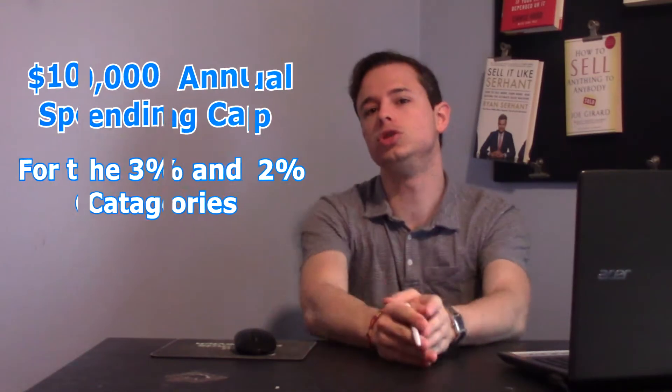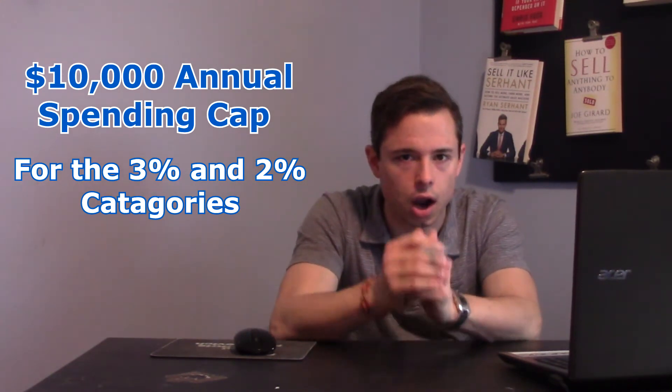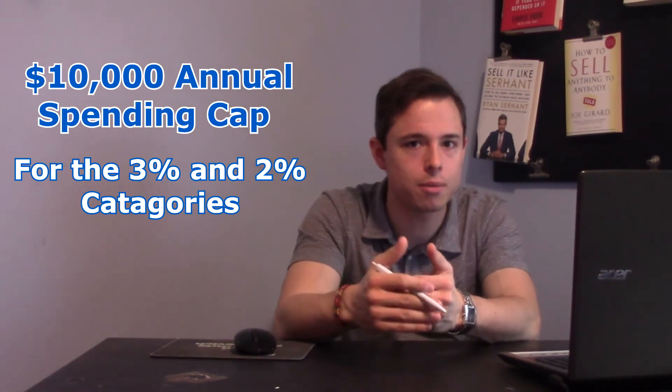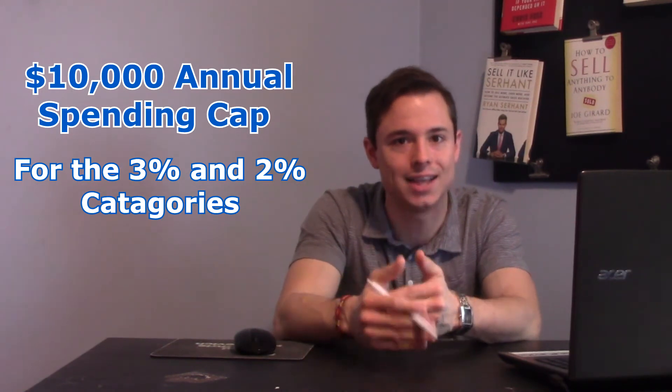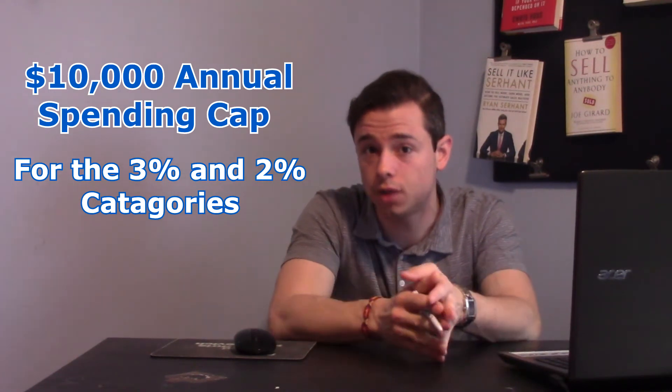Unlike other credit cards where you pick and choose your bonus category and you're locked in for a certain period of time, the Venmo Credit Card resets every month and automatically gives you 3% back on your highest spend, so you can potentially get 3% back on all these different categories depending on how your budget fluctuates.